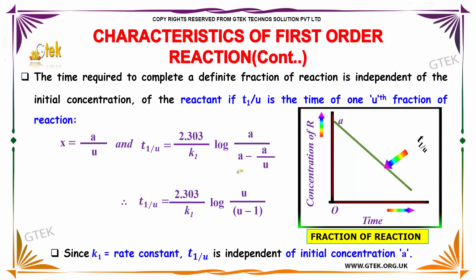Solving this equation, you'll be getting t1/u equals 2.303 divided by K1, log of u divided by (u minus 1), where K1 is the rate constant. t1/u is independent of initial concentration a.